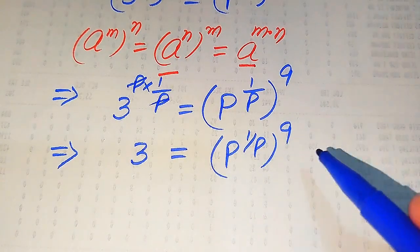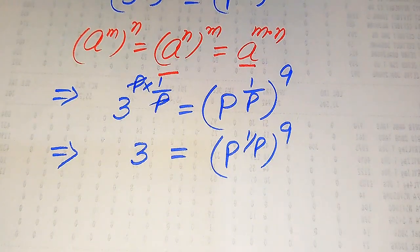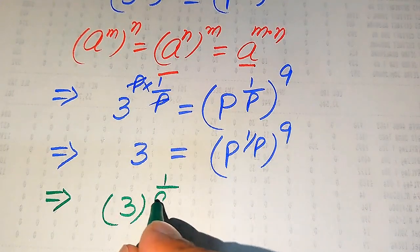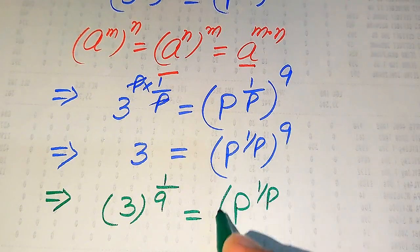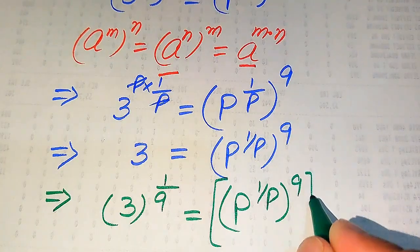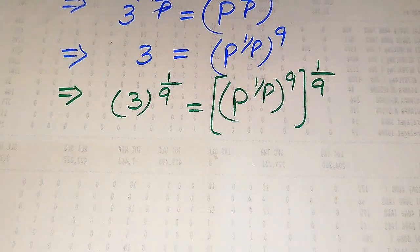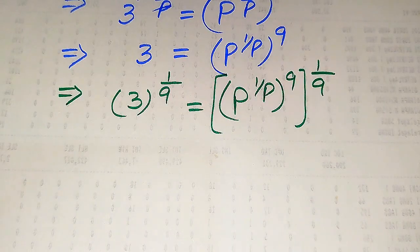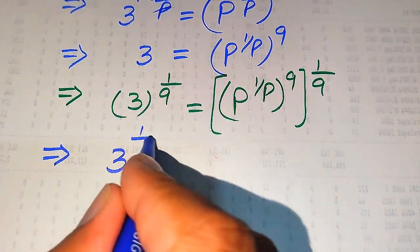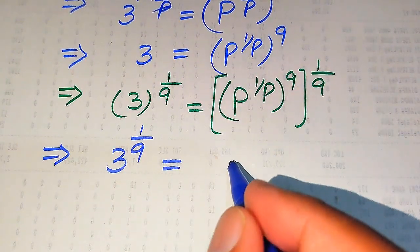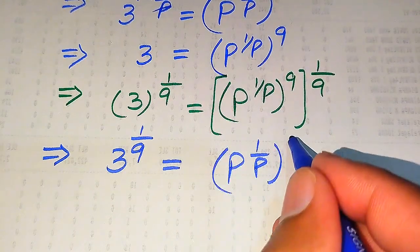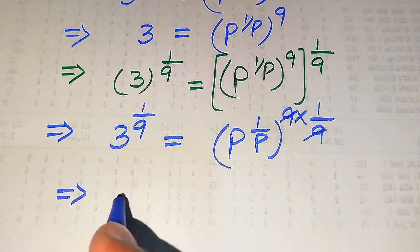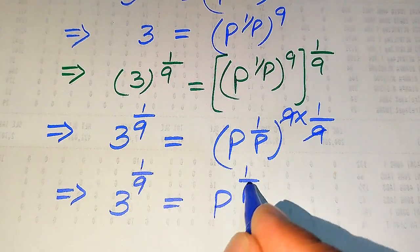Our next target is to move the constant term 9 to the left-hand side. To do this, we take the ninth root on both sides, or equivalently take the 1-over-9 power on both sides. This gives us p to the power of 1 over p, whole raised to the power of 1 over 9. Applying the exponential law again on the right-hand side, we multiply the two exponents, and the 9 cancels out. We get 3 to the power of 1 over 9 equals p to the power of 1 over p.